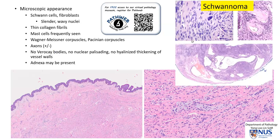Unlike the schwannoma, usually in neurofibromas we don't see really significant nuclear palisading or Verocay bodies. We can see nuclear palisading in a schwannoma. The blood vessel walls in schwannoma are very hyalinized and thickened, which is not generally a feature of neurofibroma. Trapped adnexal structures may be present, as demonstrated earlier.